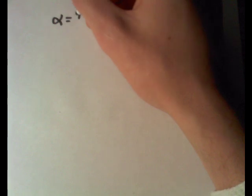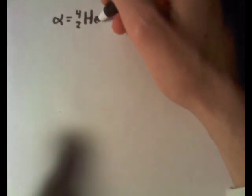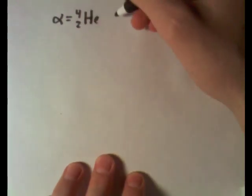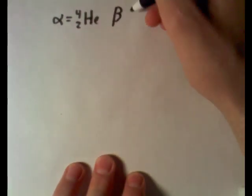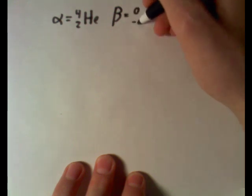There's two main things that things break down to in the reactions, and that's alpha particles, which equal four mass and two protons, which is a helium atom. And there's also a beta particle, which equals zero mass and negative one charge, which is an electron.